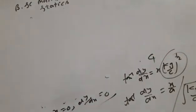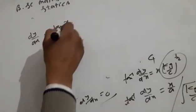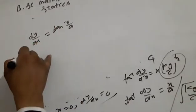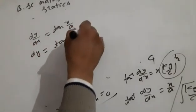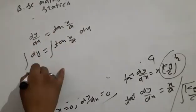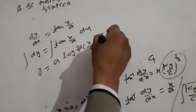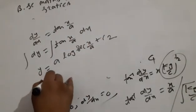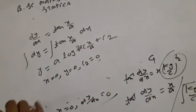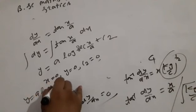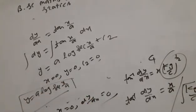Integrating dy/dx with respect to dx, we get y equals a log sec(x/a) plus c2, where c2 is an integration constant. At the boundary point x equals 0, y equals 0, so c2 equals 0. Therefore, y equals a log sec(x/a), which is the catenary of uniform string.